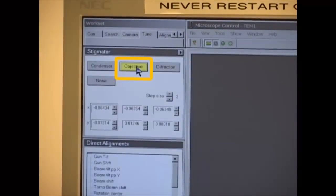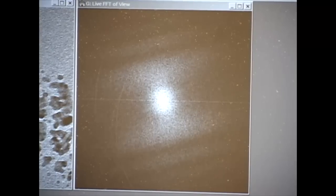Go back to Control Software and click Tune, Objective, and use the Multifunction knob to adjust the objective stigmation until the FFT circle is round.